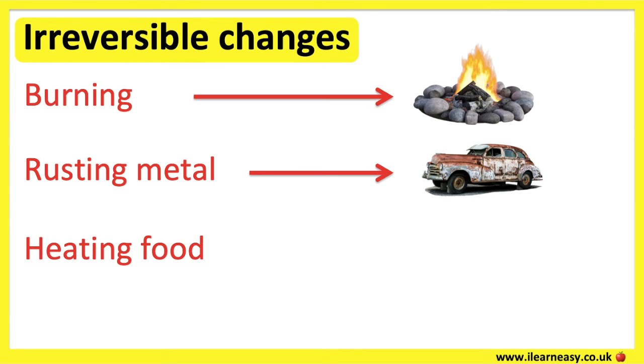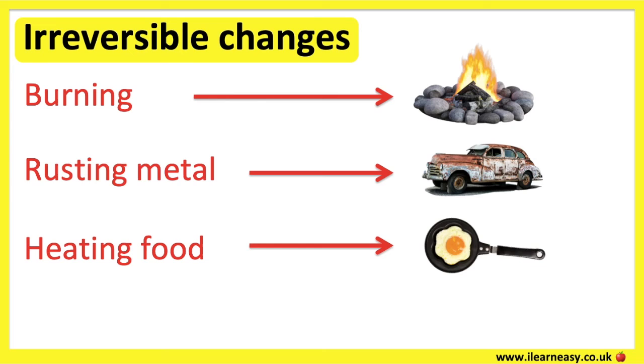Heating food: for example, cooking an egg in a pan. The cooked egg can't be reversed back to a raw egg.